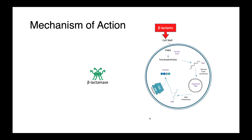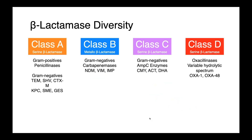Beta-lactamases are enzymes which are able to hydrolyze the four-membered beta-lactam ring, inactivating the drug and preventing it from killing the organism. There are many types of beta-lactamases. We can group them into four classes, class A through D. Within each of these families, we have enzymes with some shared characteristics. Our class A, C, and D enzymes are serine beta-lactamases, while class B are metallo-beta-lactamases.